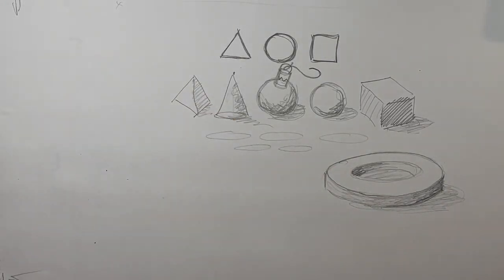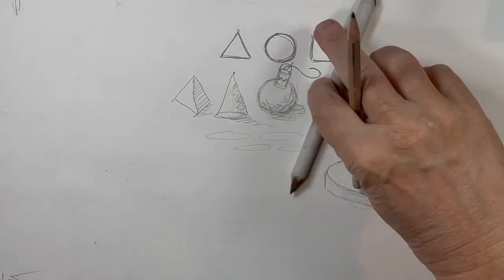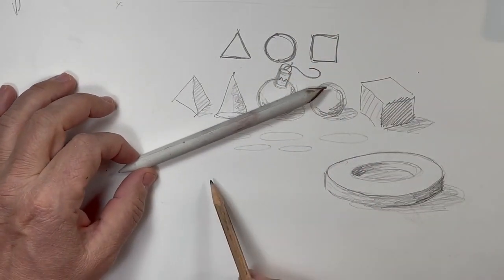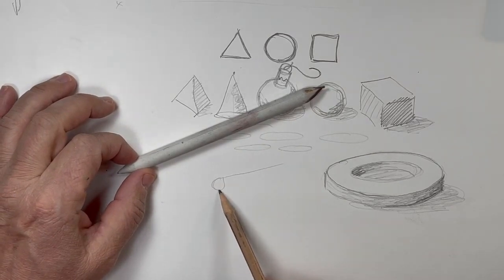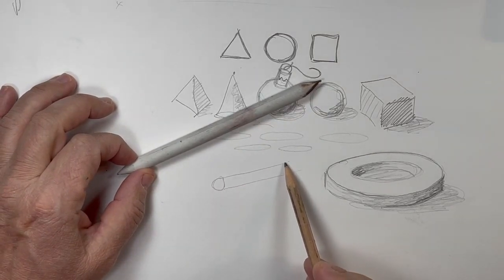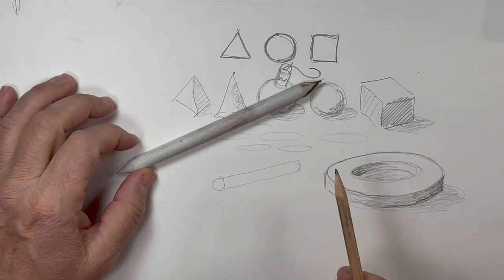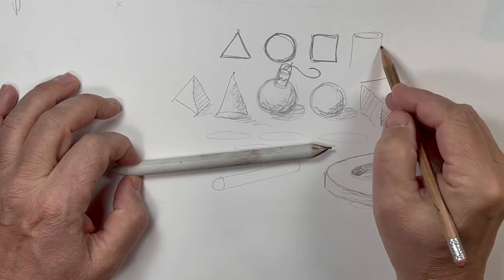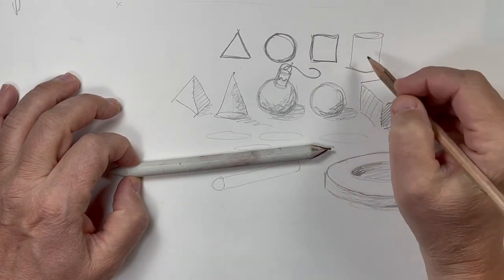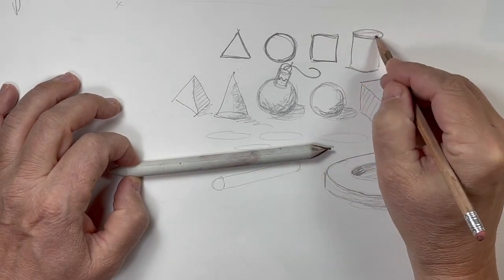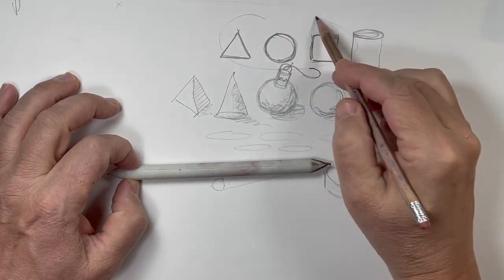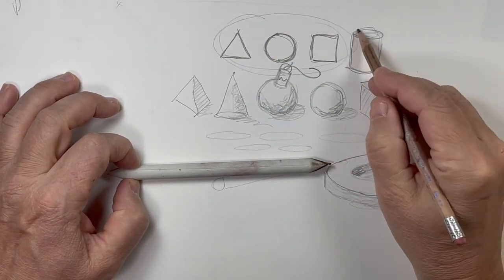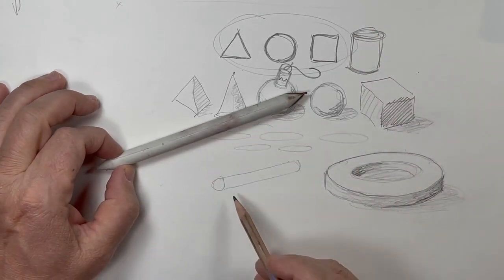Now we have this blending stump, which I've shown you before in drawing. Essentially it is an elongated cylinder. I always forget to include the cylinder because it's not in the usual top three. But there are so many more shapes you really need to think about, and one of them is the cylinder.